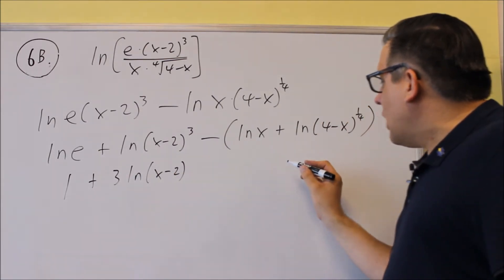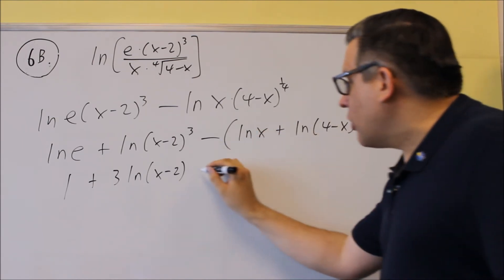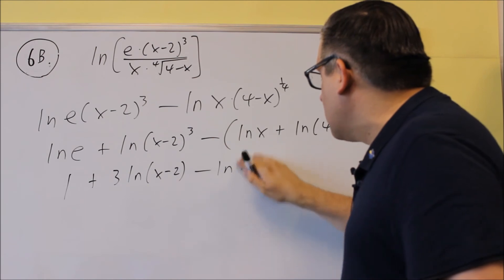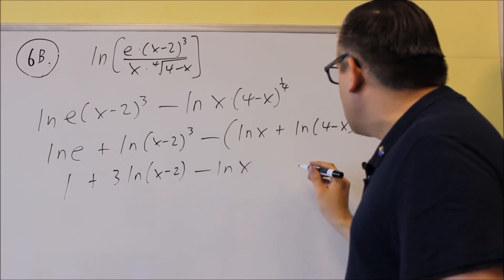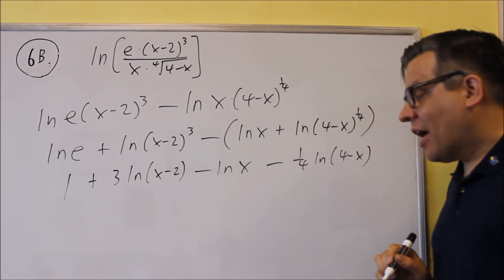And then this, you can either distribute the negative through or leave it with the parentheses, one or the other. If you distribute it, you'll get natural log of x minus 1 fourth natural log of 4 minus x.